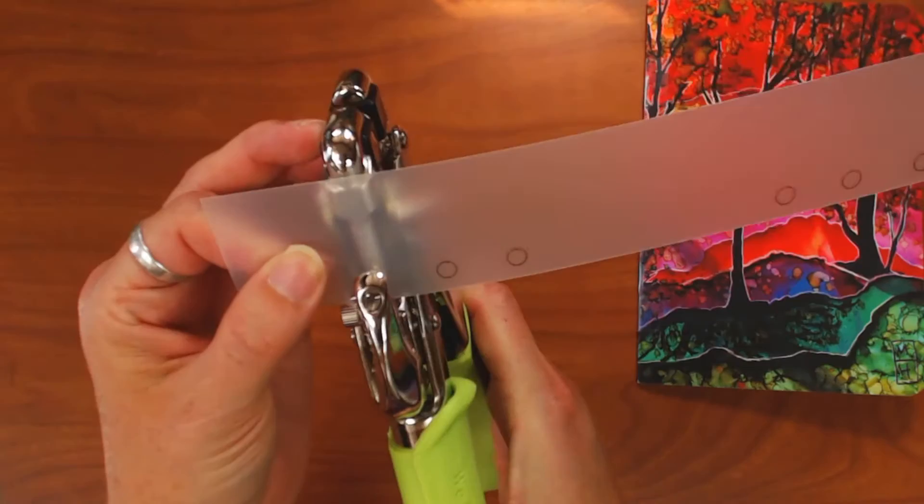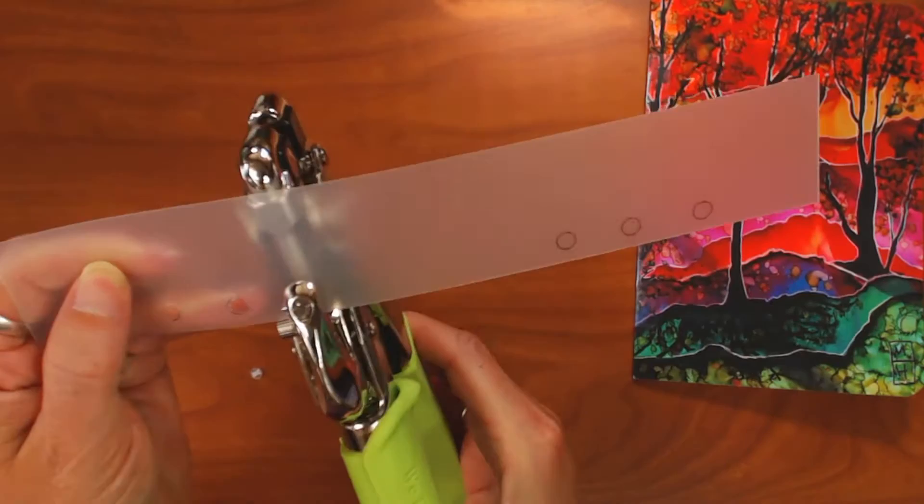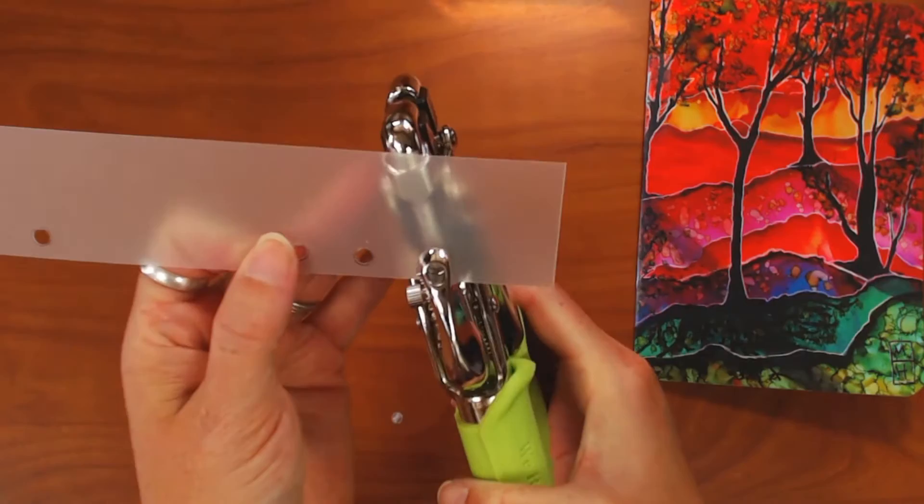Then I take my crop-a-dial and I just punch out the holes. Now if you need to make the holes a little bit bigger, just do a double punch on each hole. Make them kind of oval and then they'll be able to slide on your planner rings just fine.